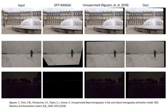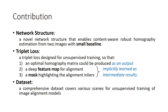Let's look at the results of all of them side by side. Simply speaking, the contributions of our method are three-fold: (1) We propose a novel network structure that enables content-aware robust homography estimation. (2) We propose a triplet loss designed for unsupervised training. (3) A new dataset which covers various scenes for unsupervised training.